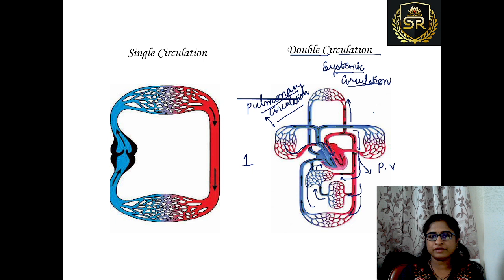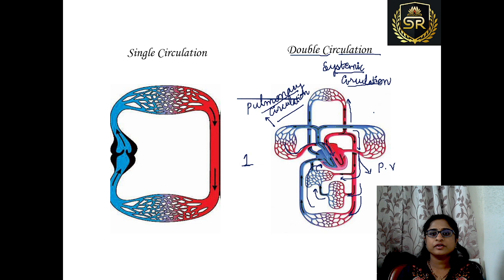In single circulation, the blood travels through the heart only once. In double circulation, the blood travels through the heart two times — that is why it is called double circulation. Two types of circulations are happening: pulmonary circulation and systemic circulation. That is the difference between single circulation and double circulation.